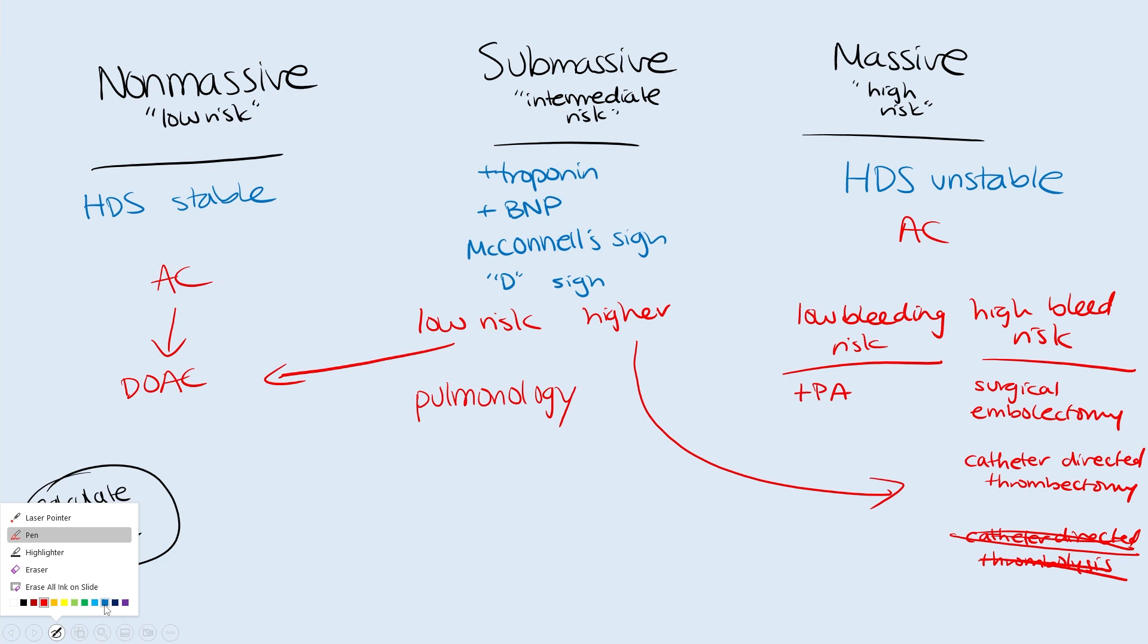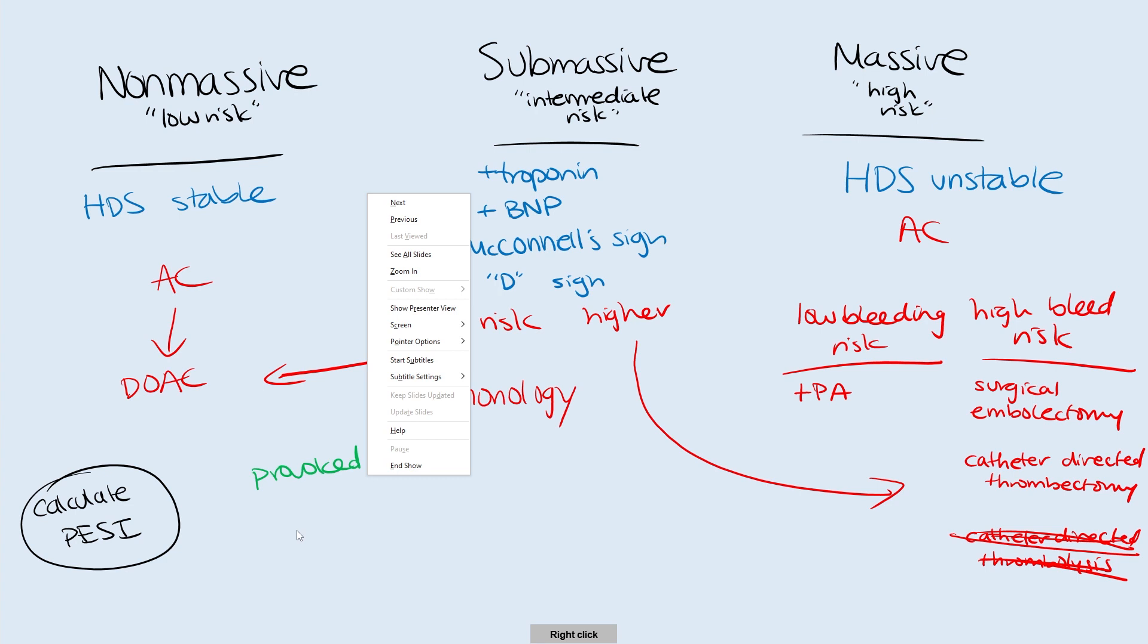One last point I want to do is you need to know the difference between provoked DVT and PE and unprovoked. Provoked means there was a clear identifying trigger: patient had a major surgery or they were traveling and were immobile for 12 hours or something. If the patient has a clear provoking factor, then they really only need three months of anticoagulation. If they had a particularly large PE, then you can sometimes do six months, but otherwise just do a finite amount of anticoagulation.